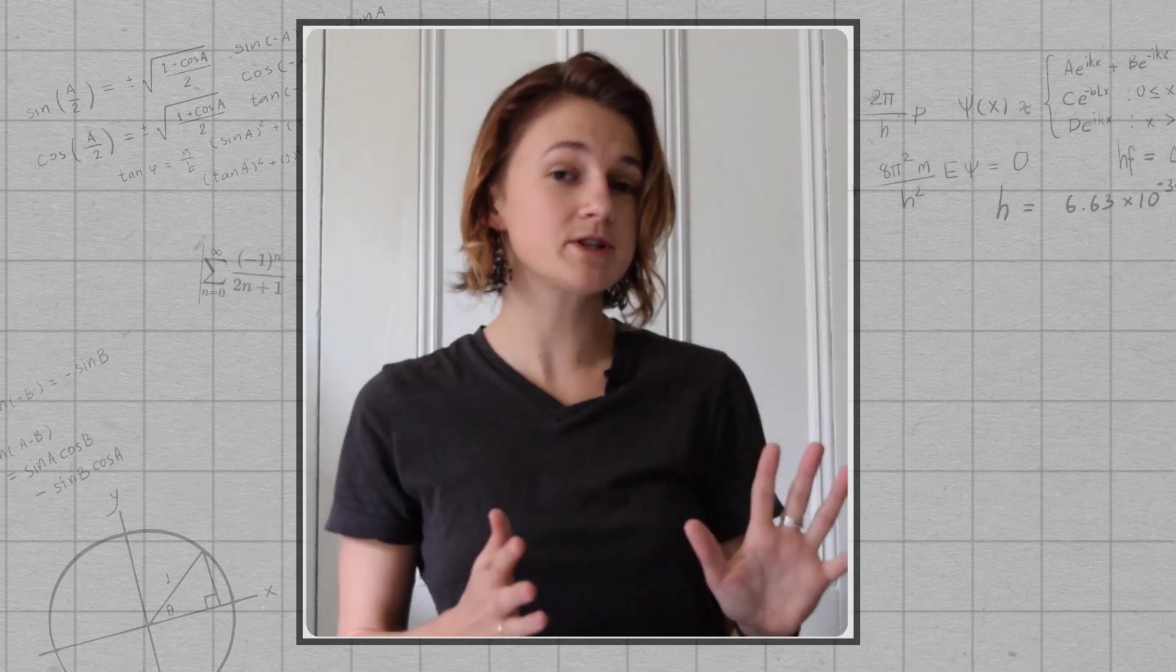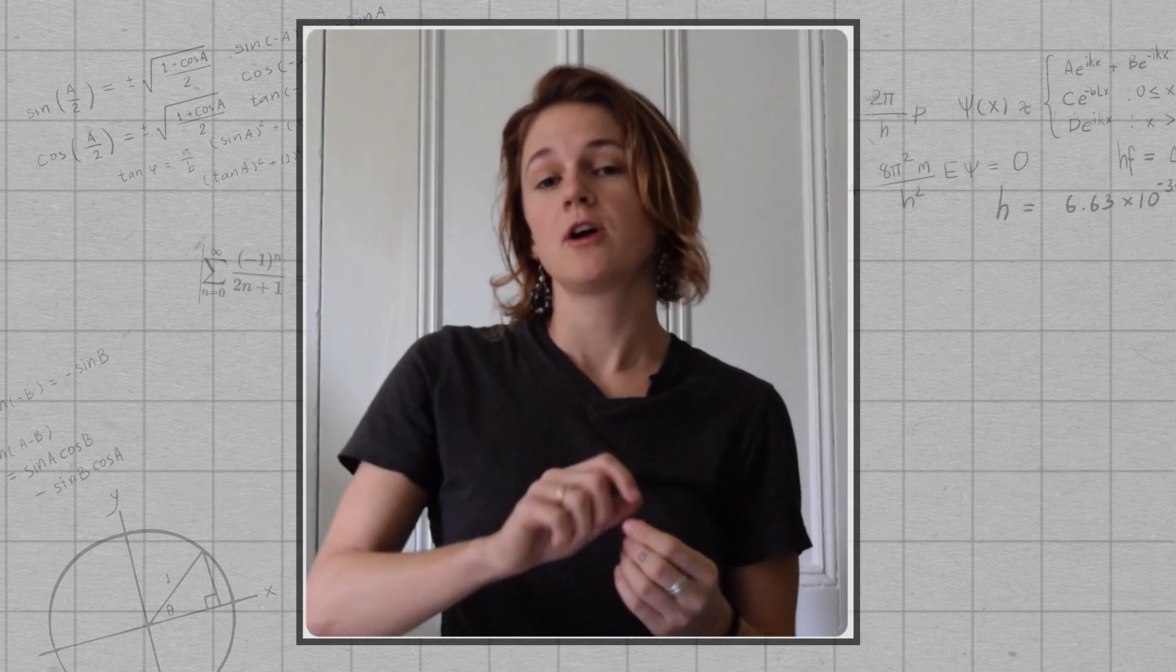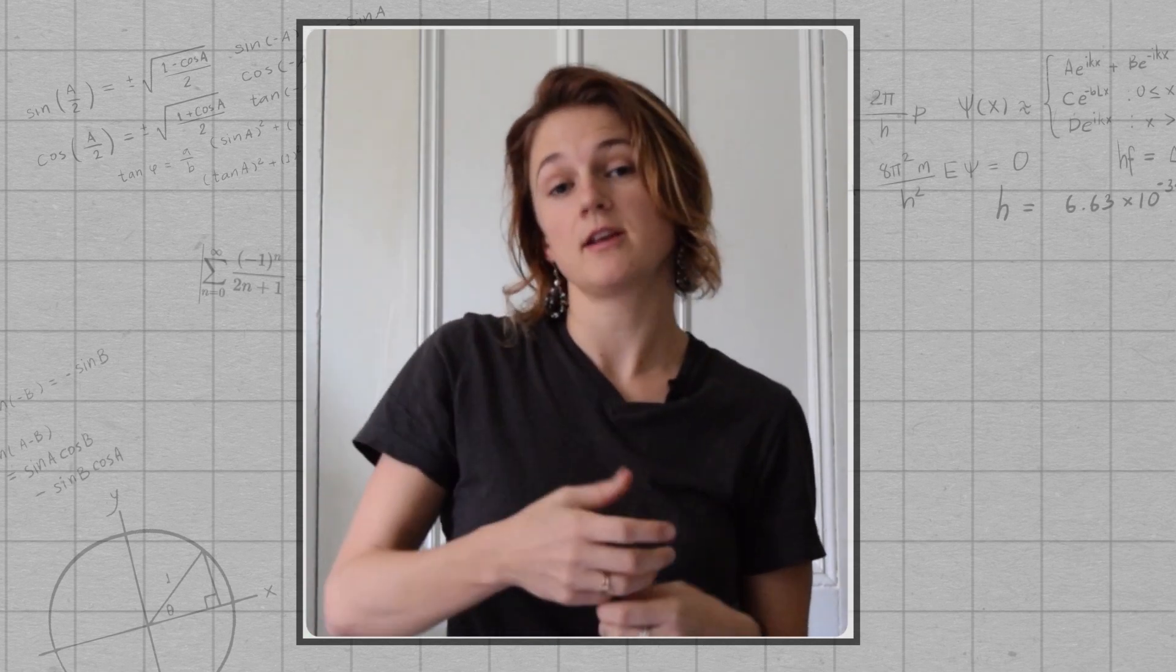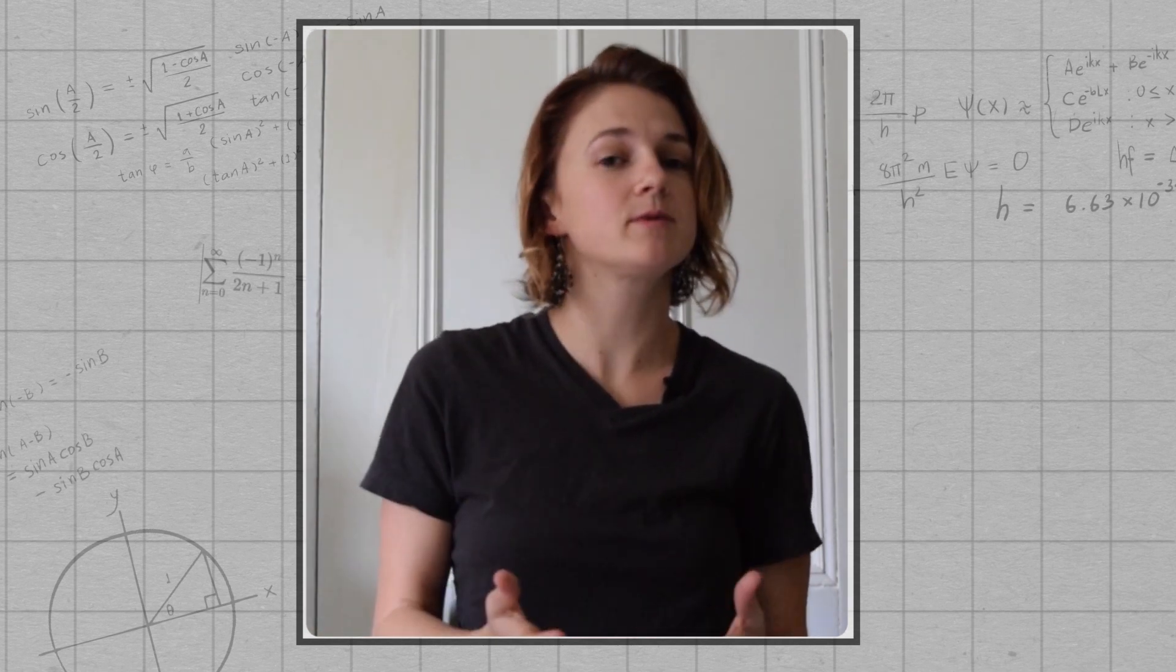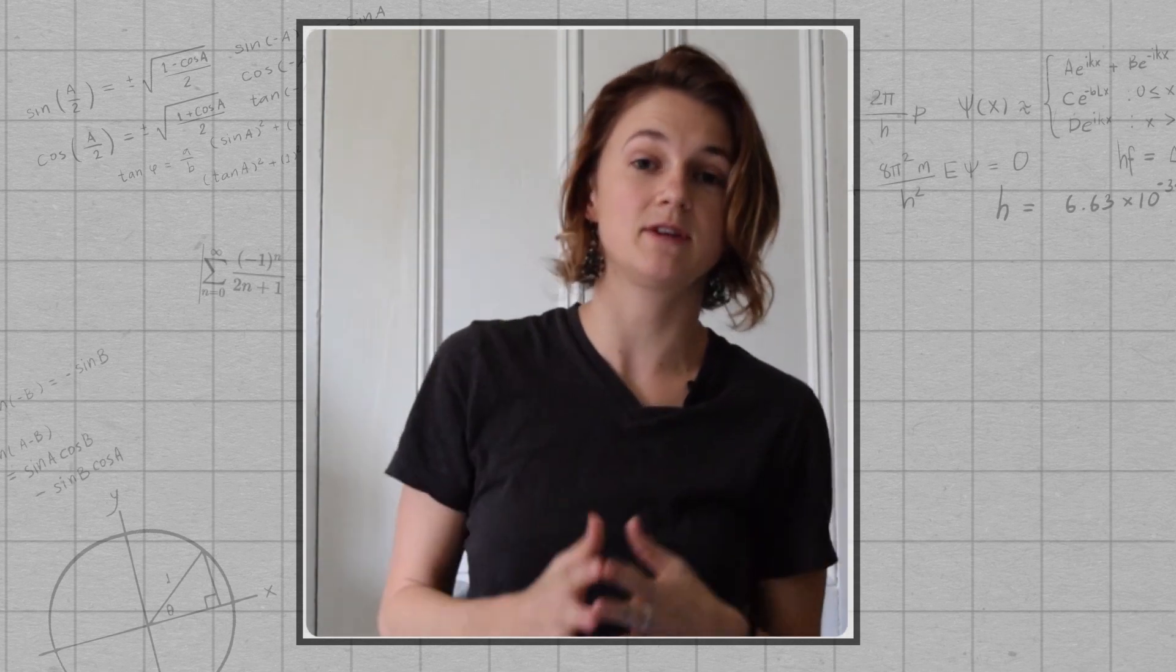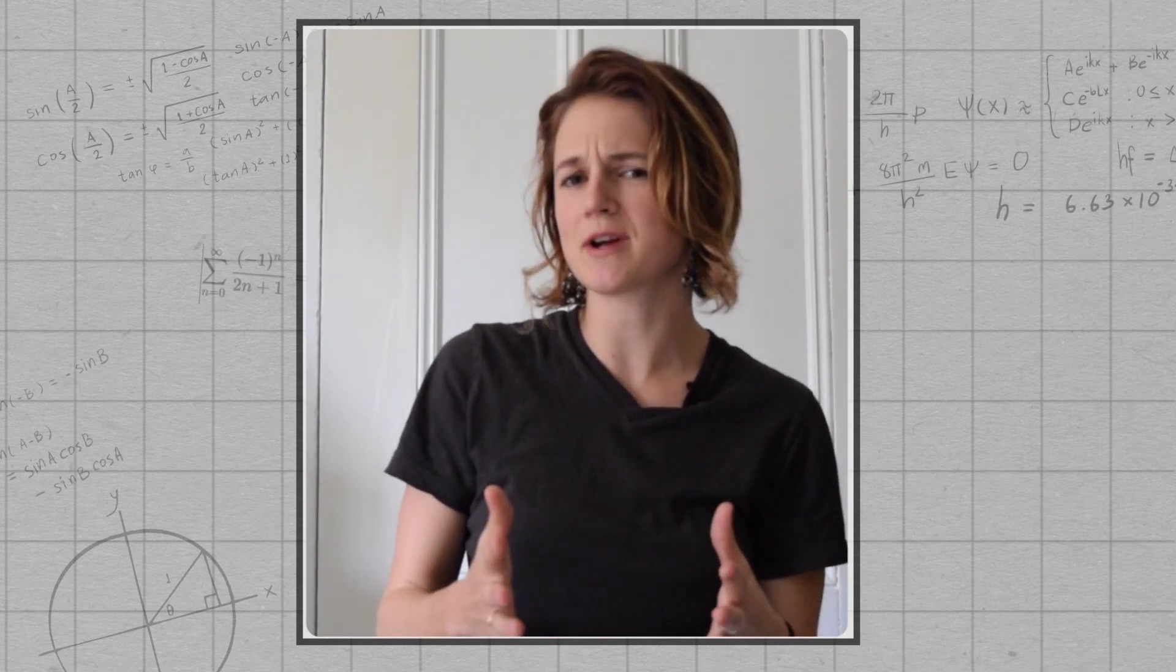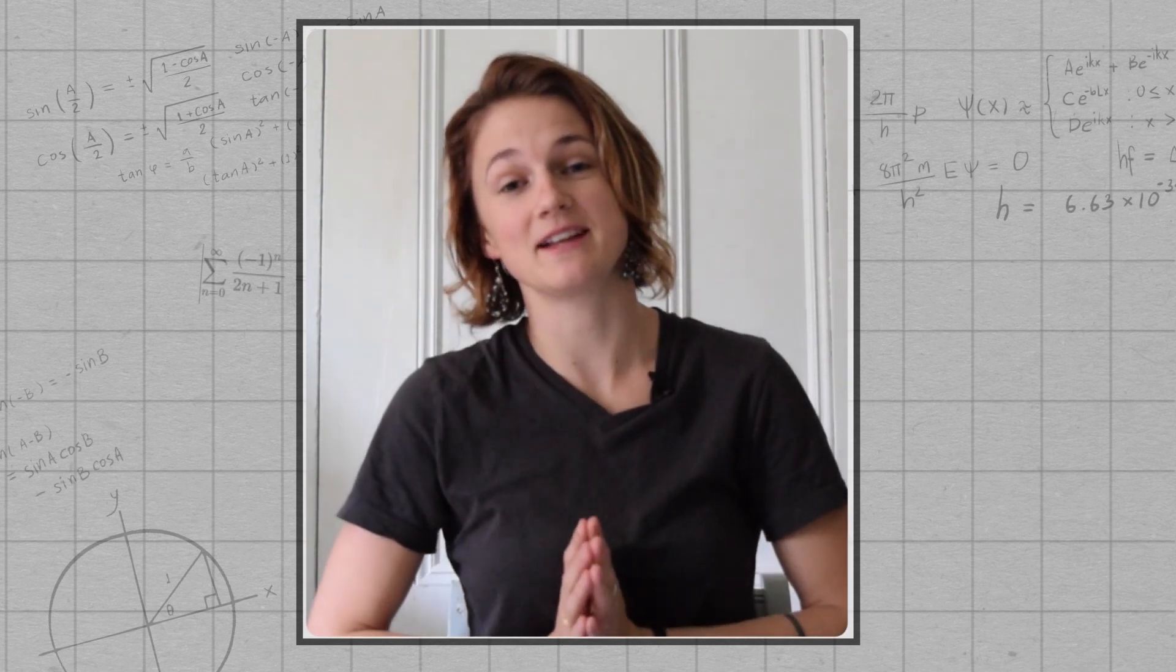So the tree we were talking about is a cop-win tree, because on any finite branch, the robber will eventually get caught. But if there were an infinitely long branch, then the tree would become robber-win, because the robber could just keep going along that infinitely long branch. So that's a great question.